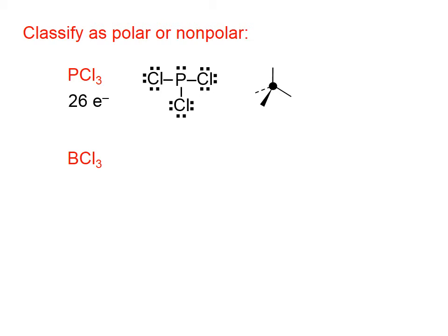The electron domain geometry will be tetrahedral around the phosphorus, because there are four electron domains. The molecular geometry will be trigonal pyramidal.